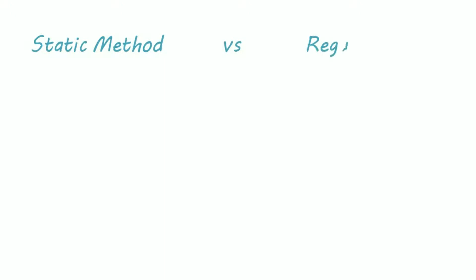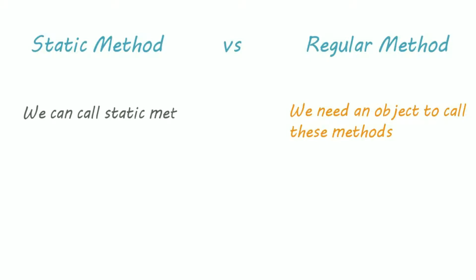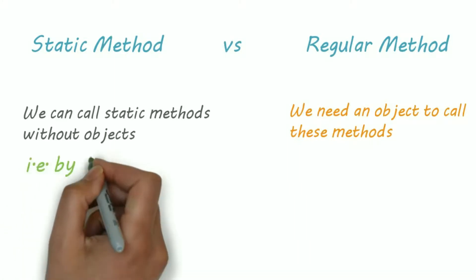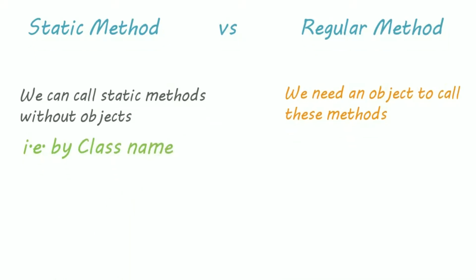How are static methods different from regular methods? To call a regular method we need an object — without an object of that class you cannot call a method of that class. But static methods belong to the class itself, which means you can call a static method from anywhere just by using its class name.